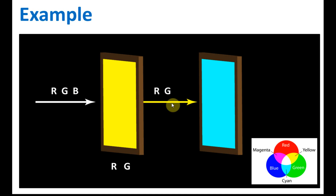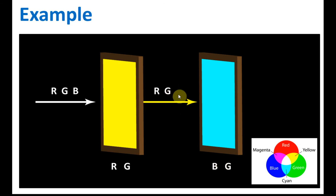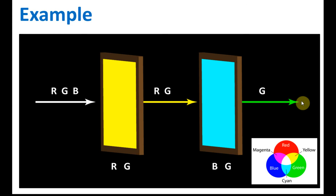The yellow light then moves towards the cyan filter. Cyan is blue and green, so the red light will be blocked because cyan has no red. We only have red and green coming in, so only green is allowed to pass through. The color that comes out from the second filter is green. So white light through a yellow filter then a cyan filter produces green light — which is surprising, but that's how it works.